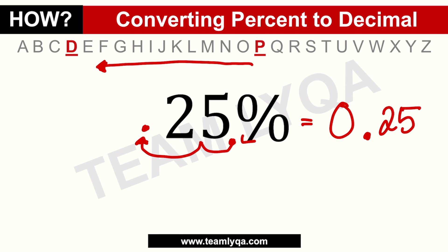Think about it — P is near the end of the alphabet, going back to D which is near the front, so it has to move to the left.